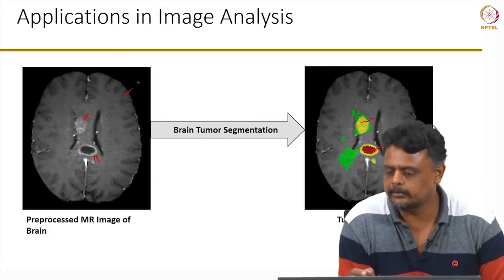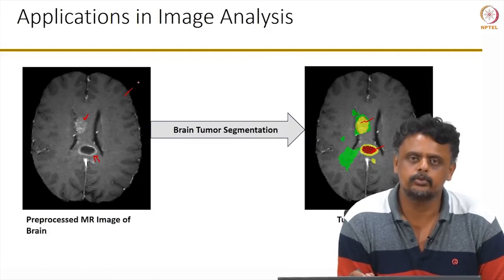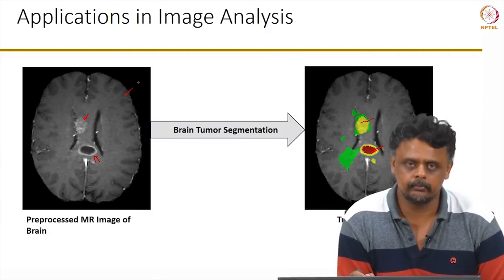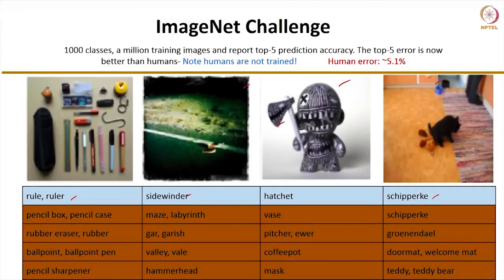This can serve as a huge support for radiologists who look at these kinds of images every day for interpreting them and diagnosing patients. The ImageNet challenge is a visual recognition challenge that has been going on for quite a few years. The organizers make available millions of images drawn from the internet and labelled by experts as belonging to one of 1000 categories.